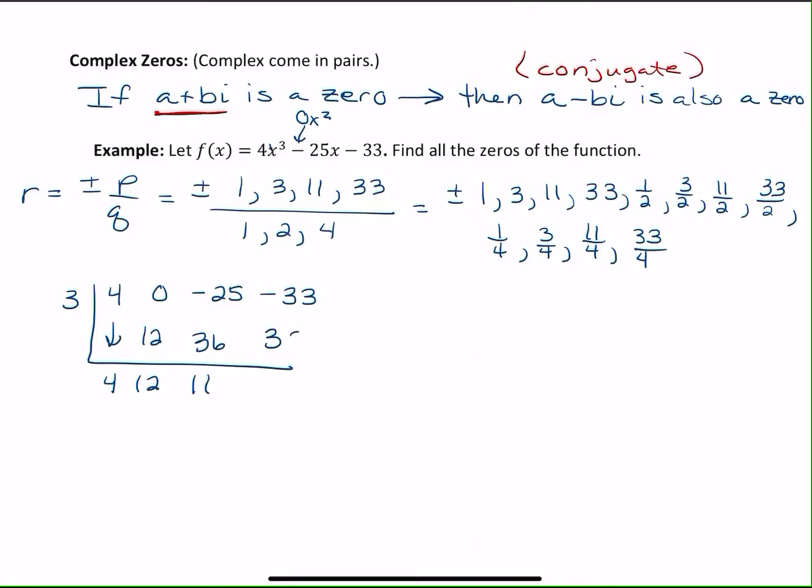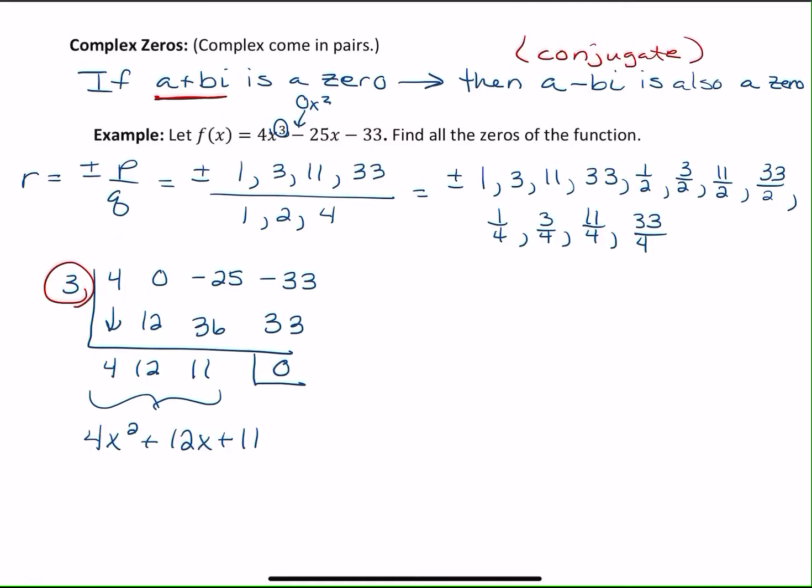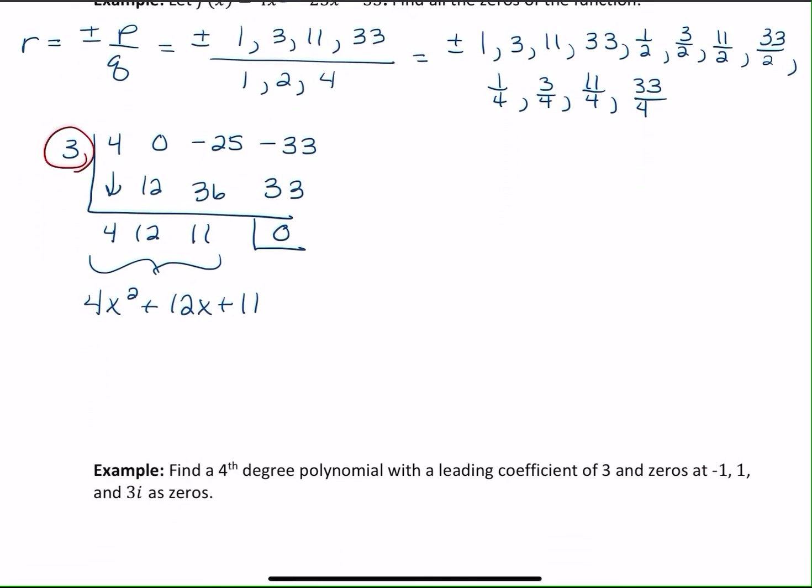And this actually works. You get a negative 3. So 3 is one of my zeros. And now, since I started with a cubed root, this is a quadratic 4x squared plus 12x plus 11. And you might try a couple times, but you'll soon realize that this won't factor. So if that doesn't factor, you're going to have to go to the quadratic formula. So my a is 4, b is 12, and c is 11.